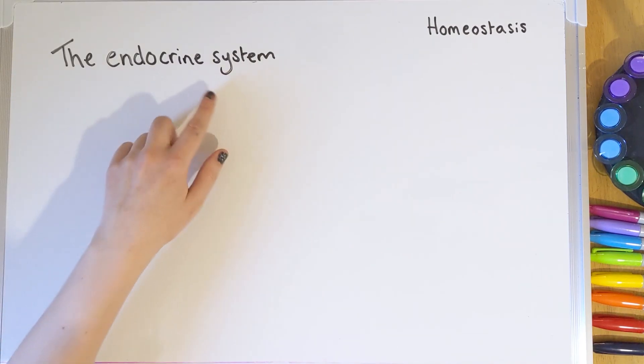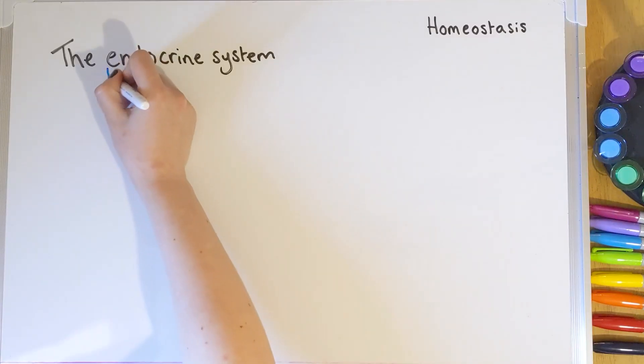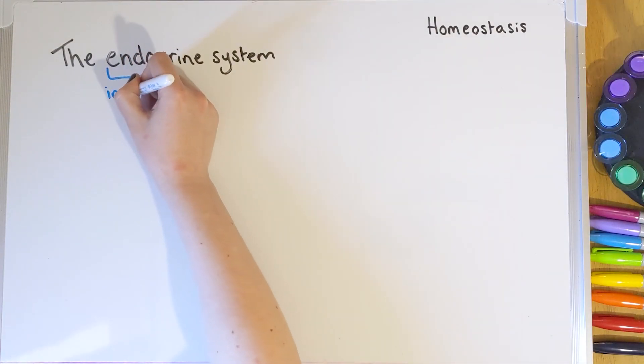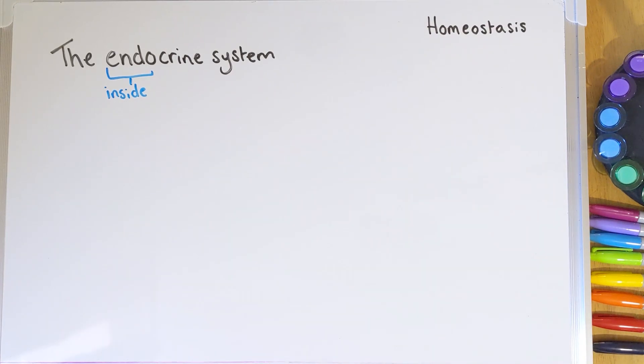Let's start with what the endocrine system is and break down these key terms. The 'endo' part — if you see words in science, especially in biology, that have this 'endo' part, that often means something's going on inside. For example, you and I have an endoskeleton — our skeleton is inside. But insects like woodlice have an exoskeleton — their shell is on the outside. So exo means outside, endo means inside.